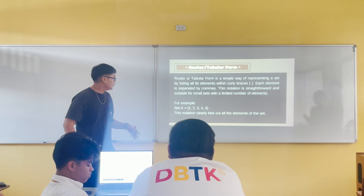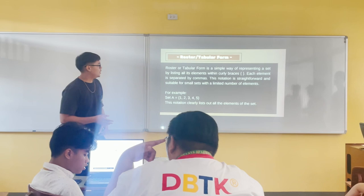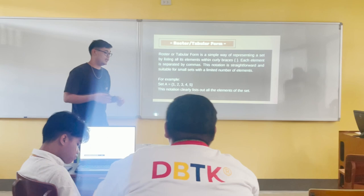First, we have the roster tabular form. In simple explanation, it is representing a set by listing all its elements within curly braces, and each element is separated by commas. This notation is straightforward and suitable for small sets with a limited number of elements.